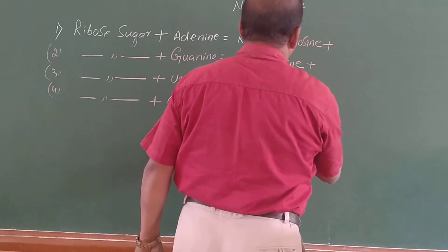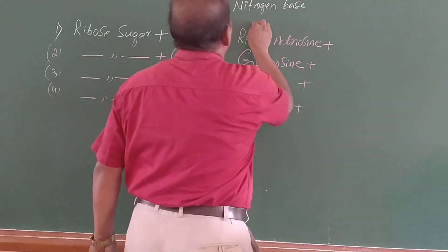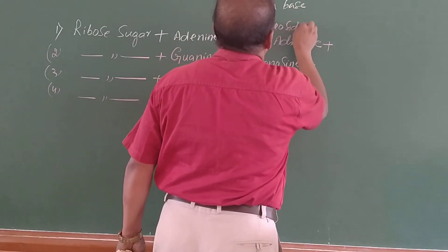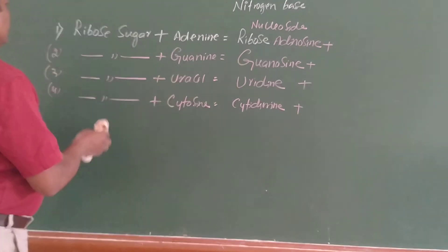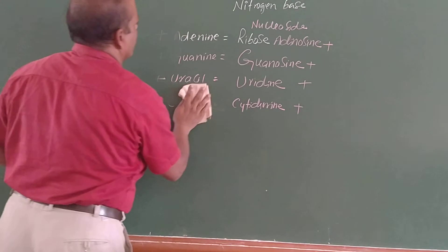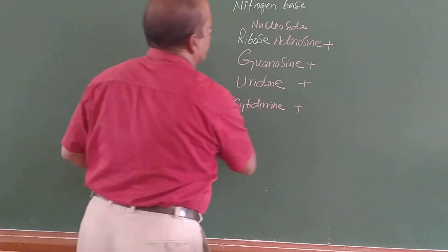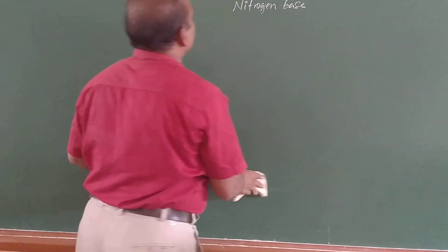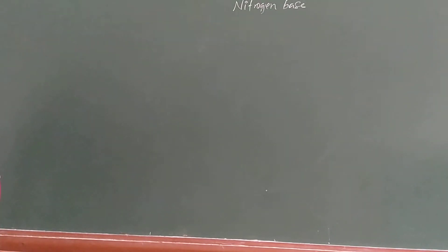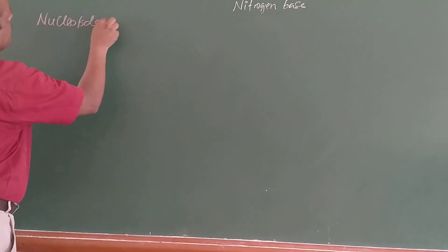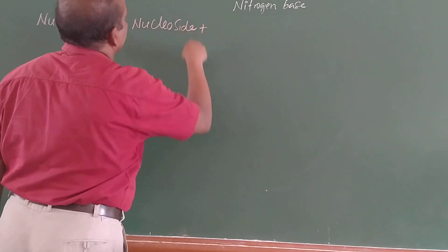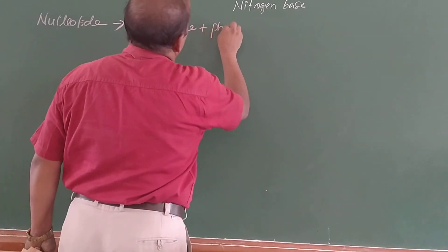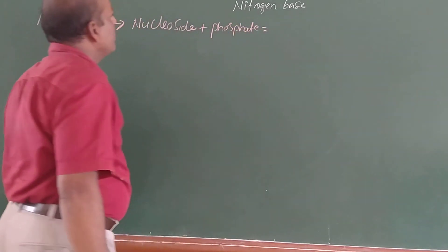Now, when a nucleoside combines with phosphate, that will become a nucleotide. So: nucleotide = nucleoside plus phosphate.